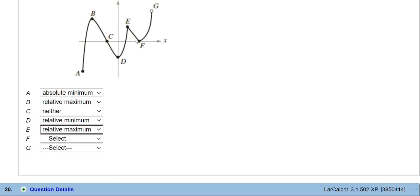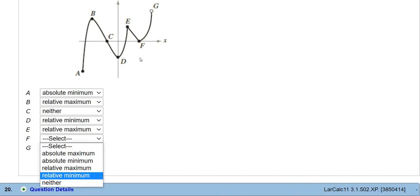F is a relative minimum. Relative to the points around it, it's smaller. It's a really nice example, so you can really see what they are.